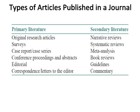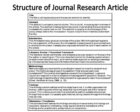Structure of a journal research article. Title: the title is self-explanatory and the easiest element to identify. Abstract: the abstract is unique to journal articles. It is a brief, one-paragraph overview of the article, designed to help you know whether the journal article is valuable for you to read or not. The abstract is usually on the first page, always before the introduction, and is typically found indented underneath the title.